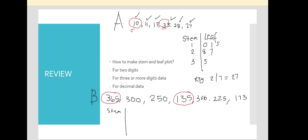For 3 or more digits, we leave the last digit as the leaf part and pick all the other digits as the stem. For 3-digit numbers, the first two digits form the stem. Our lowest is 135, so we start with 13. We can skip stems with no data — so 13, skipping 14, 15, skipping 16, then 17, skipping 18 and 19.